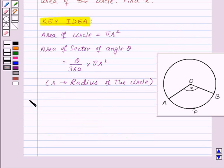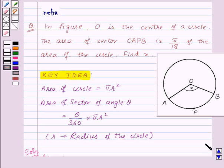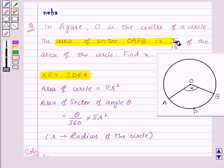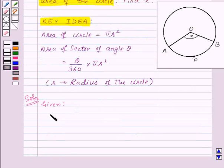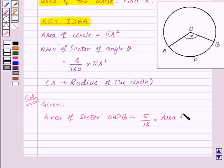Now let's move on to the solution. First of all, let us see what we are given in the question. We are given that area of sector OAPB is 5 by 18 of the area of the circle. So we have area of sector OAPB is equal to 5 by 18 into area of circle.